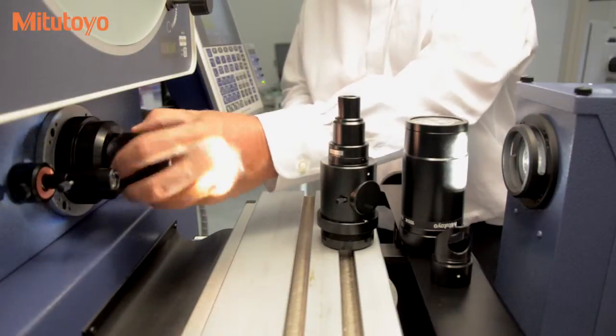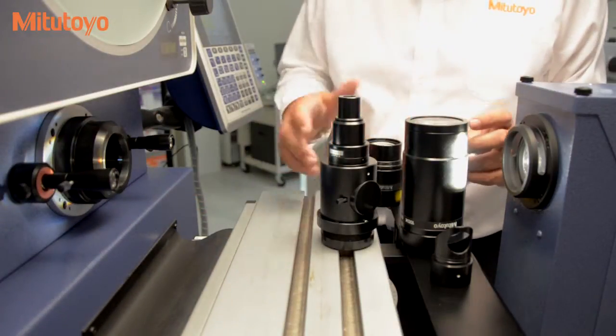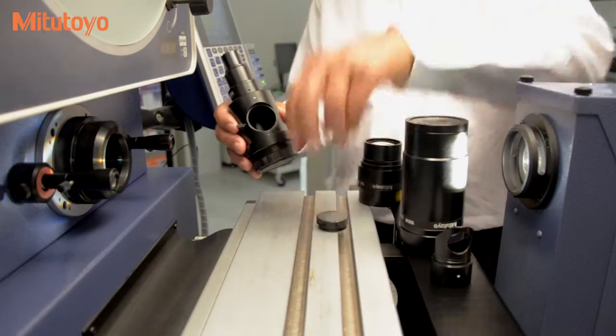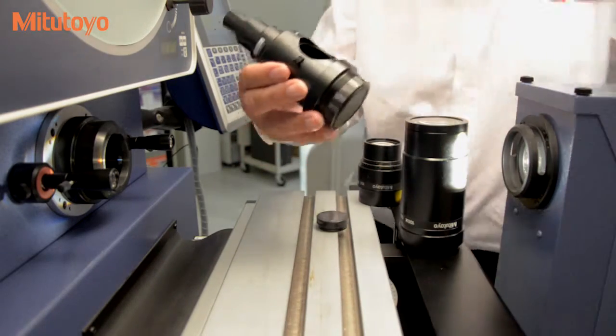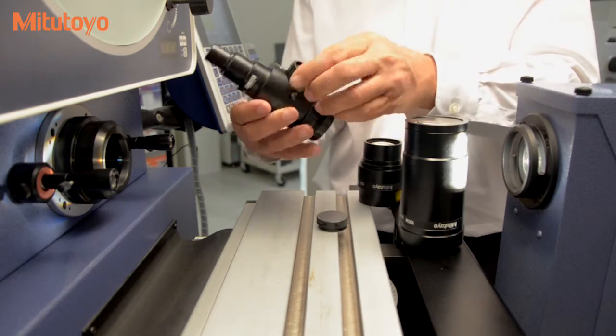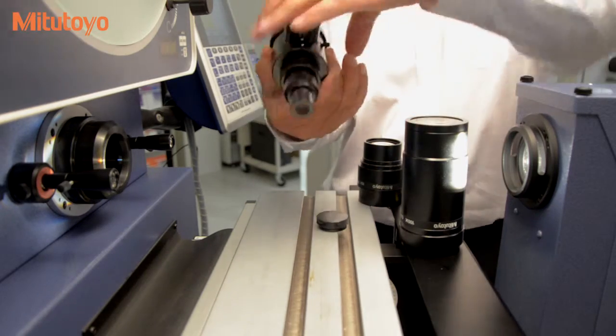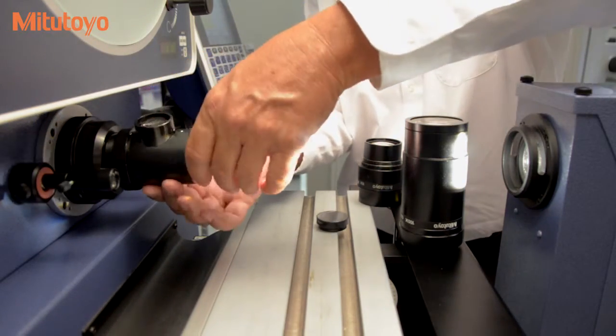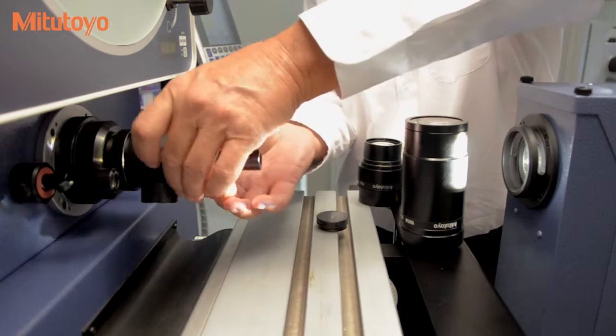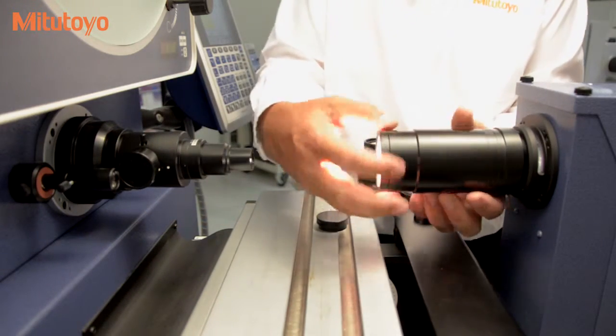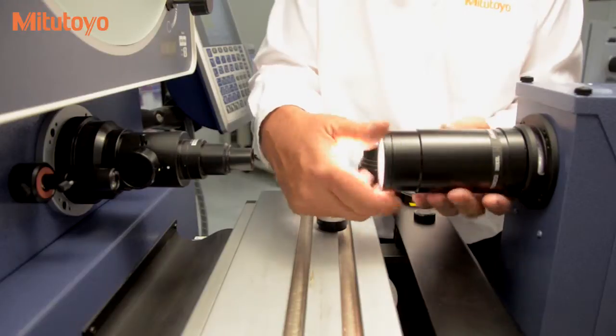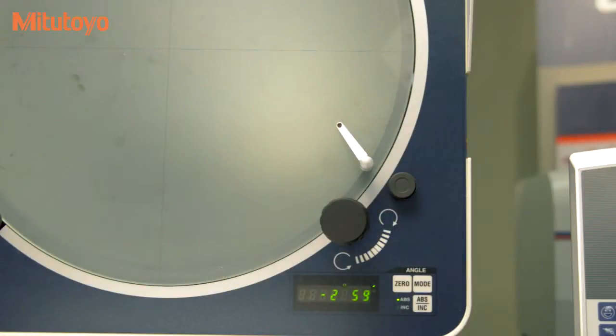The PH 3515 includes a 10 times objective lens, but can accommodate lenses from 5 times to 100 times. Lenses thread in for positive positioning. Lens sets include the proper condensing lens and surface illumination mirrors when required.